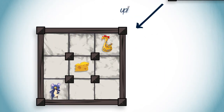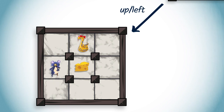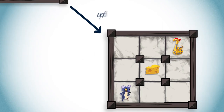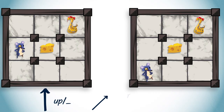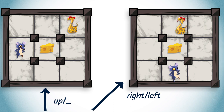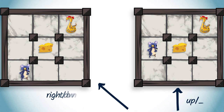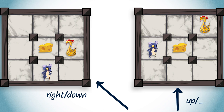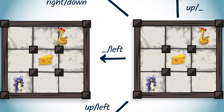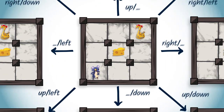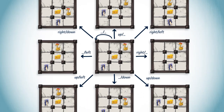We thus have 3x3, so 9 configurations that can be reached from the initial configuration. These include: rat moves up and python moves left; rat moves up and python stays still; rat moves up and python moves down; rat moves right and python moves left; rat moves right and python stays still; rat moves right and python moves down; rat stays still and python moves left; rat stays still and python moves down; and finally, both the rat and the python stay still.